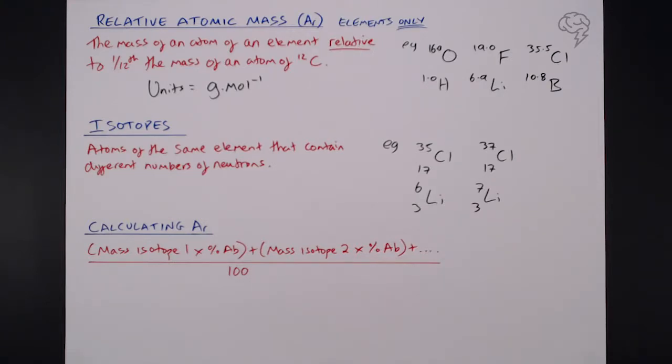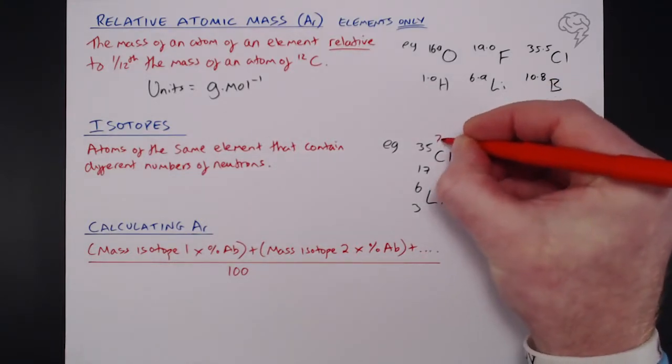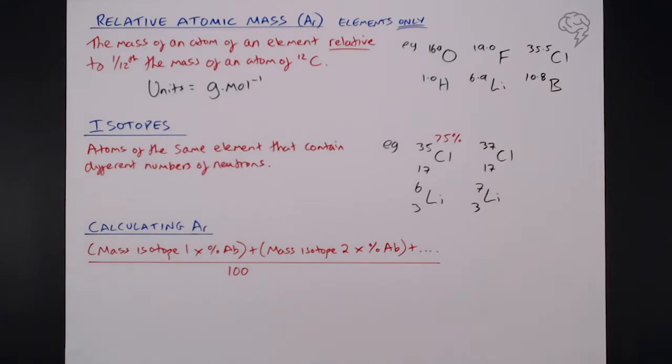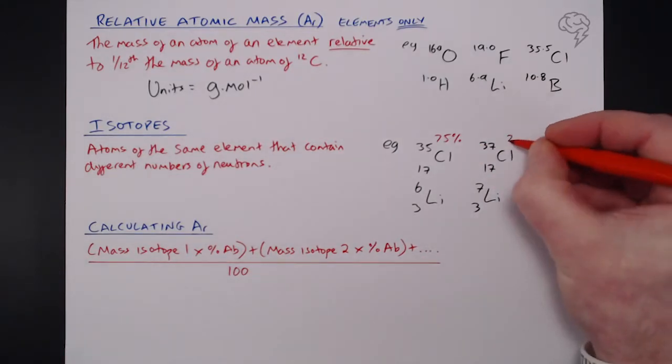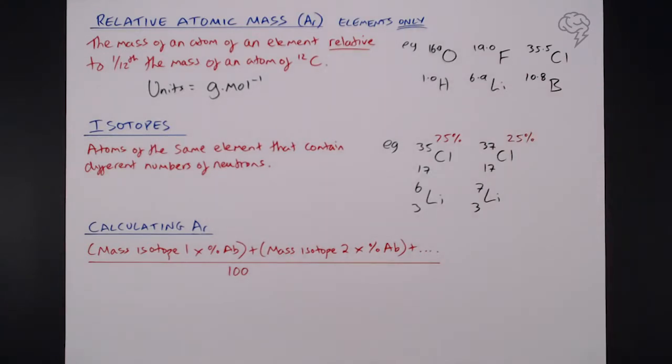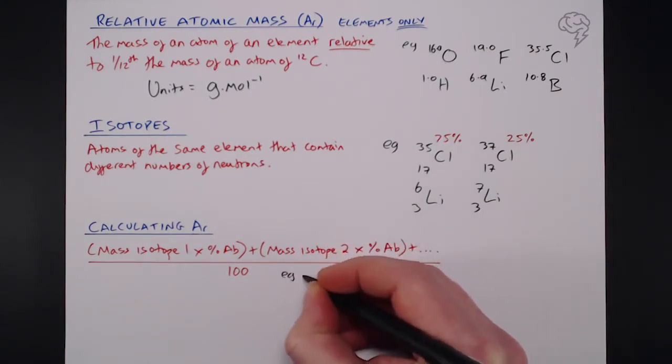So, by way of an example, I know for a fact that 75% of all chlorine in the universe is chlorine-35. 25% is, of course, chlorine-37. So, just to show you that this calculation actually works. So, for example, for chlorine,